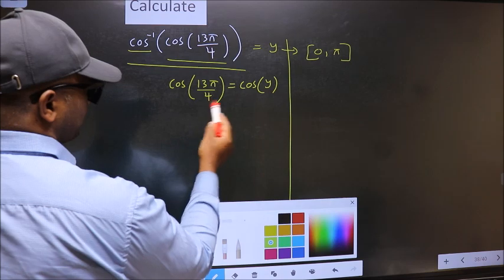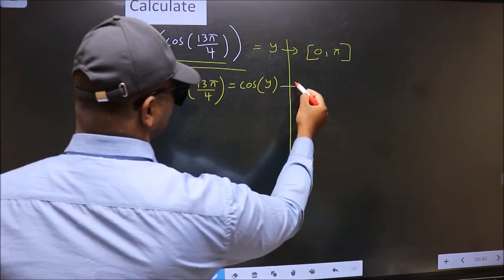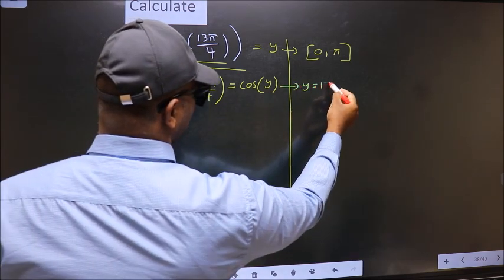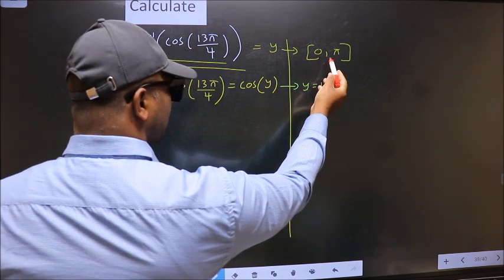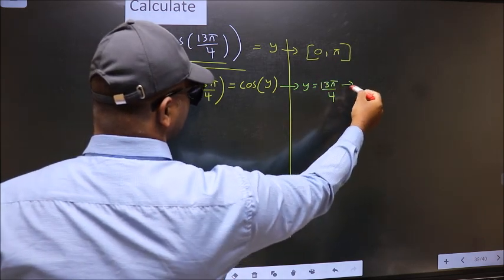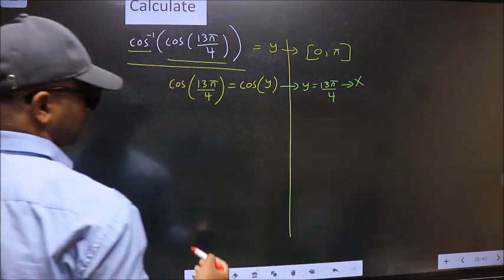Now comparing both sides we get Y to be 13π by 4. Does this lie in this interval? No. So reject this answer. Next.